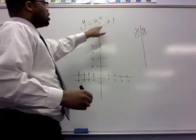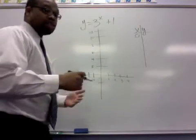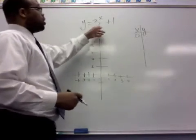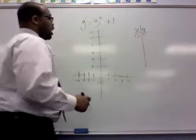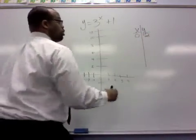Once we start there, if x equals 0, that's 3 to the 0 power. Whenever that happens, anything to the 0 power is 1. So we'd end up with 1 plus 1, and that will be 2. So our y-intercept would be 2.